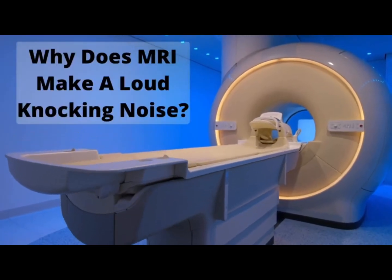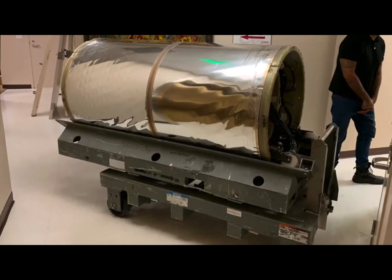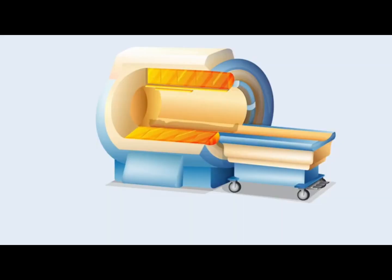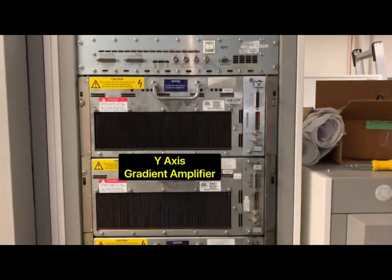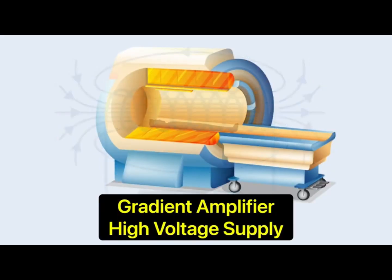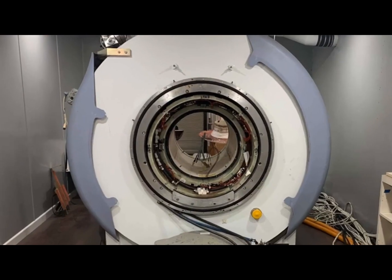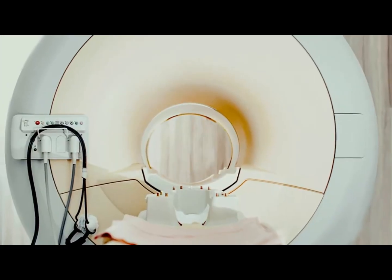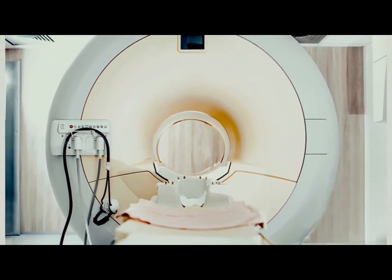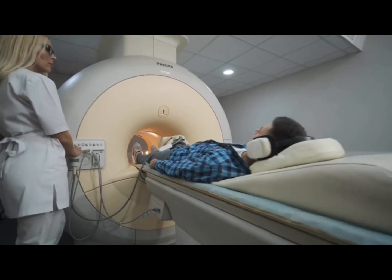The loud knocking noise in MRI scans comes from the gradient coil, which houses three sets of wire coils and produces a strong time-varying secondary magnetic field. Gradient amplifiers supply each axis with rapid pulses of high voltage electricity that contract and expand the coils inside the MRI scanner. The loud knocking noise is the sound of the gradient coils interacting with the primary magnetic field, causing the coils to vibrate against the fiberglass mountings. This can reach noise levels in excess of 100 decibels, so patients must always be outfitted with proper hearing protection.